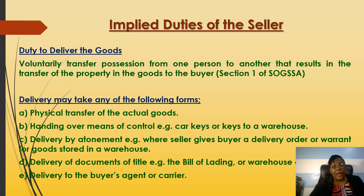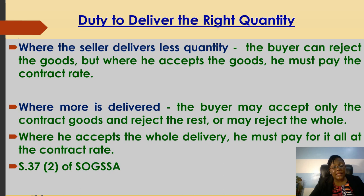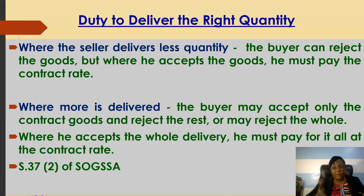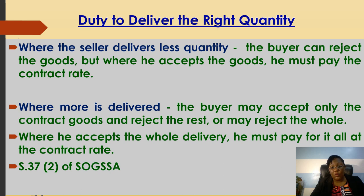The second responsibility of the seller is the duty to deliver the right quantity. If the seller delivers less than what was ordered, the law allows the buyer to accept what is given and pay only for that, or to reject everything. If the seller delivers more than what was ordered, the buyer may take only what was wanted and return the rest, reject everything, or take everything — but whatever is taken must be paid for at the contract price.